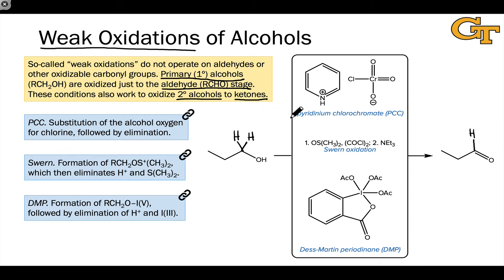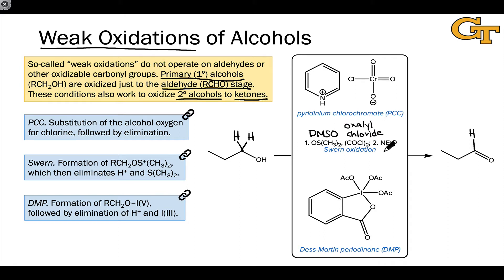The first is a chromium-based reagent less reactive than chromic acid called pyridinium chlorochromate, or PCC. The second is a witch's brew of reagents collectively called the Swern oxidation, which involves dimethyl sulfoxide (DMSO), COCl2 — a reagent called oxalyl chloride — and an amine base such as triethylamine. Finally, we'll look at oxidation by a periodinane called Dess-Martin periodinane, or DMP, which contains iodine in a very high oxidation state.